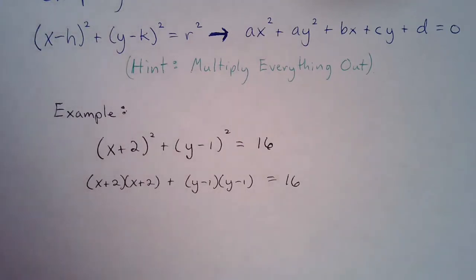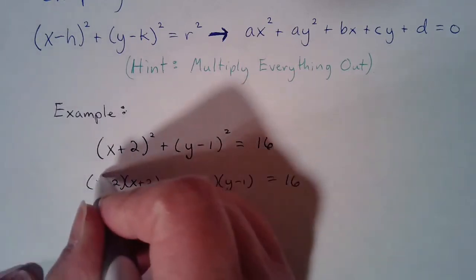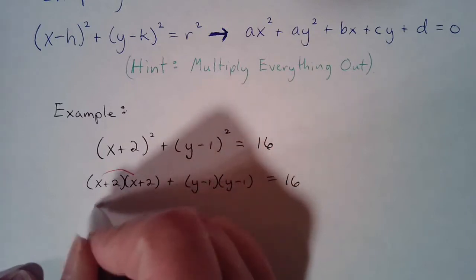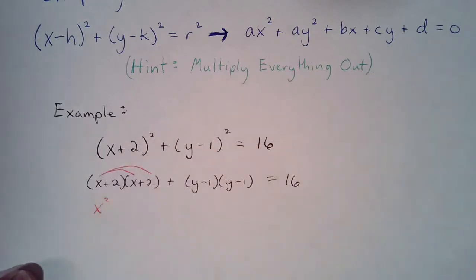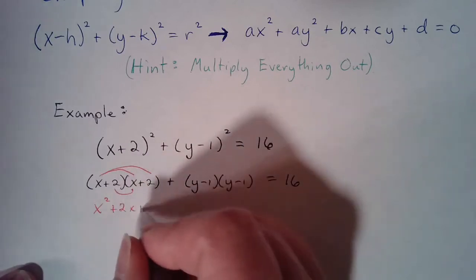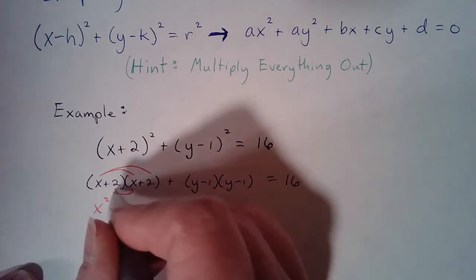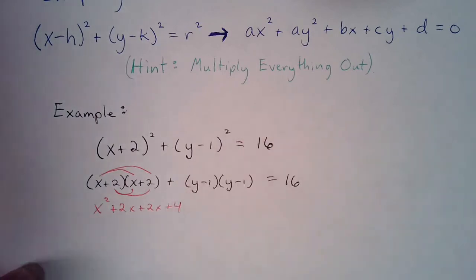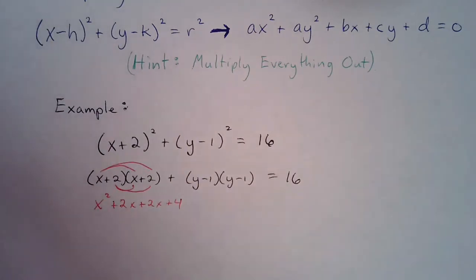Alright, so let's start with the first one. I'm going to use the distributive property. So x times x is x². x times two is 2x. And then we have two times x, which is also 2x. And two times two is four. Okay, so that's using the distributive property twice.